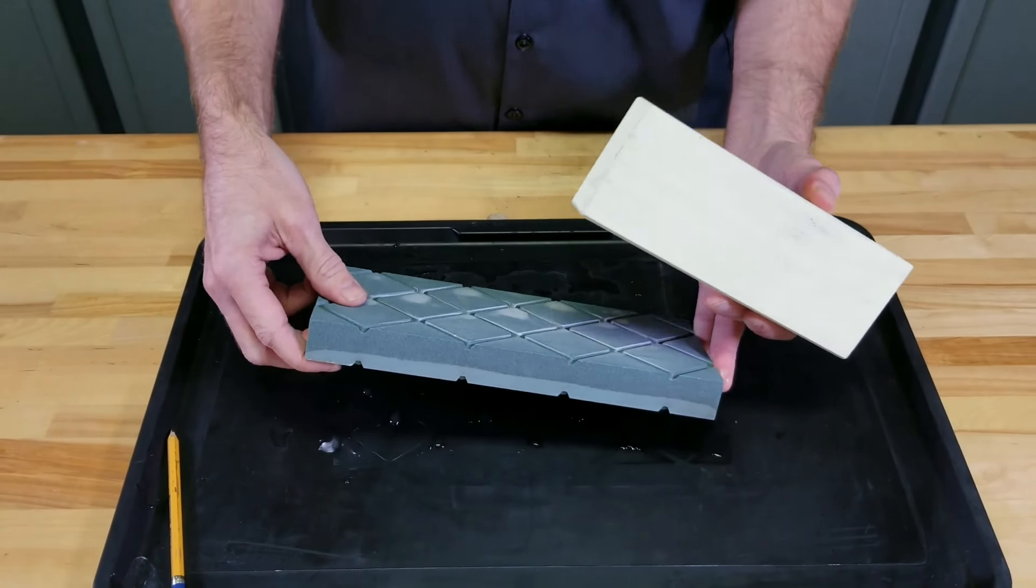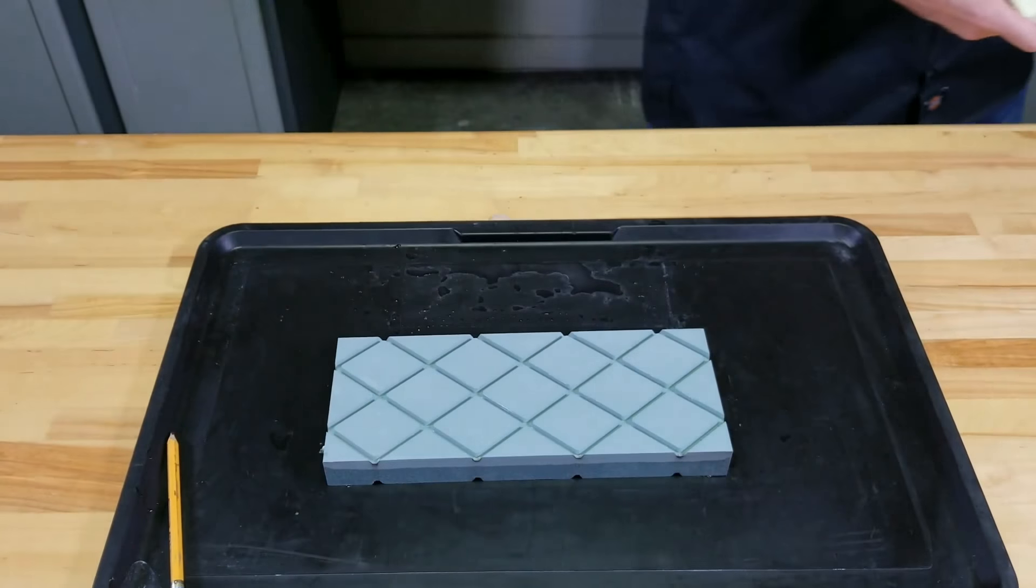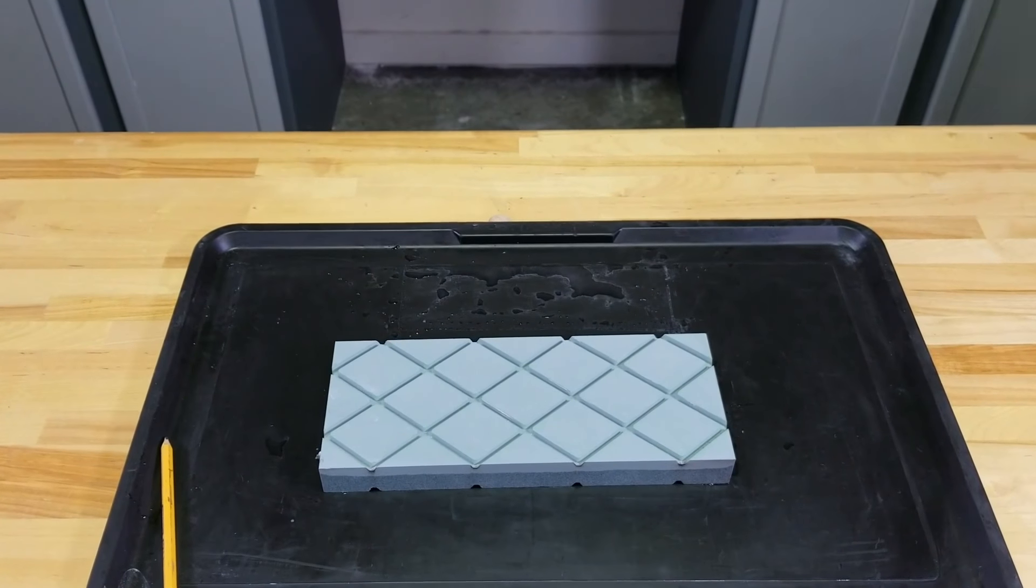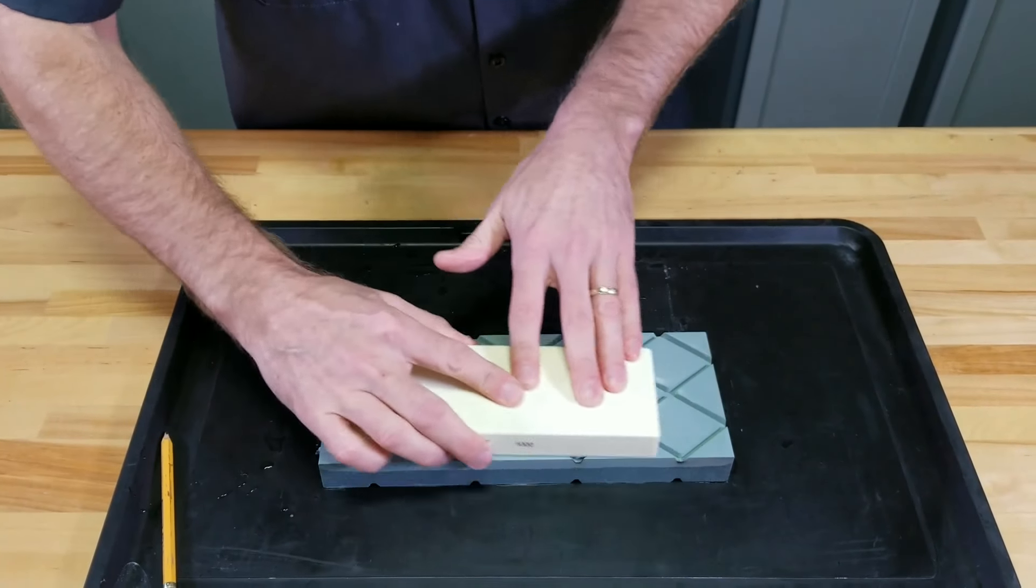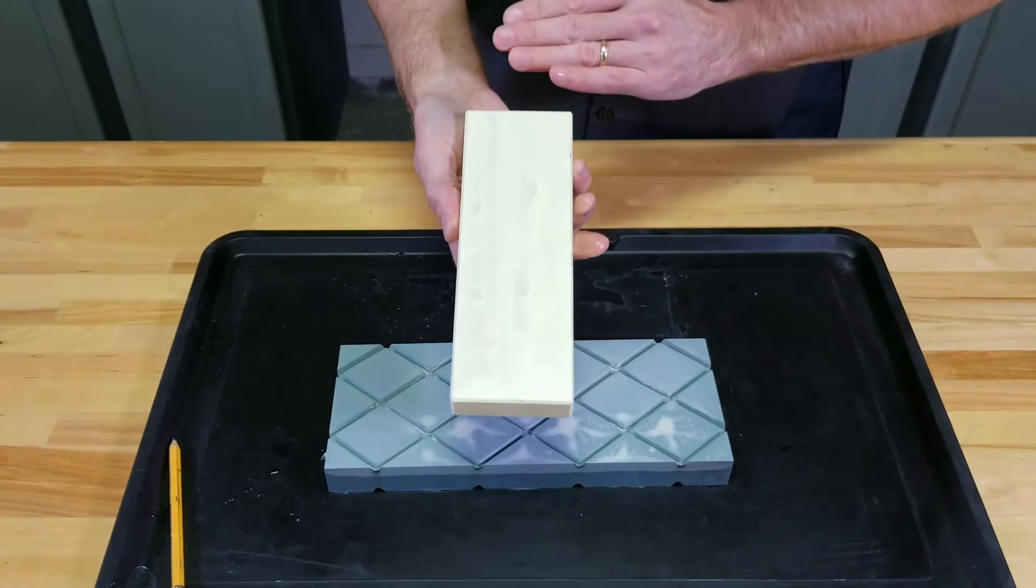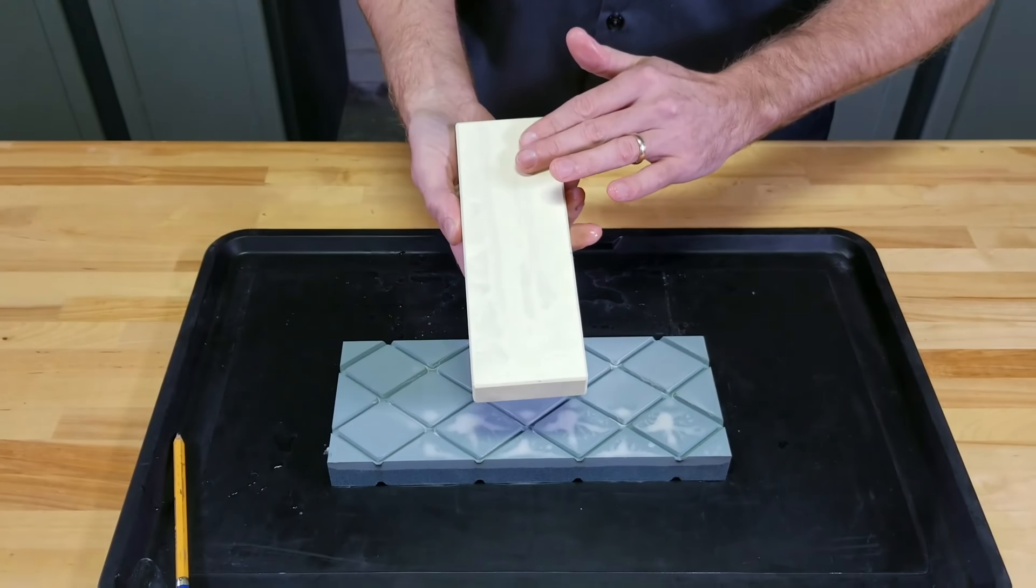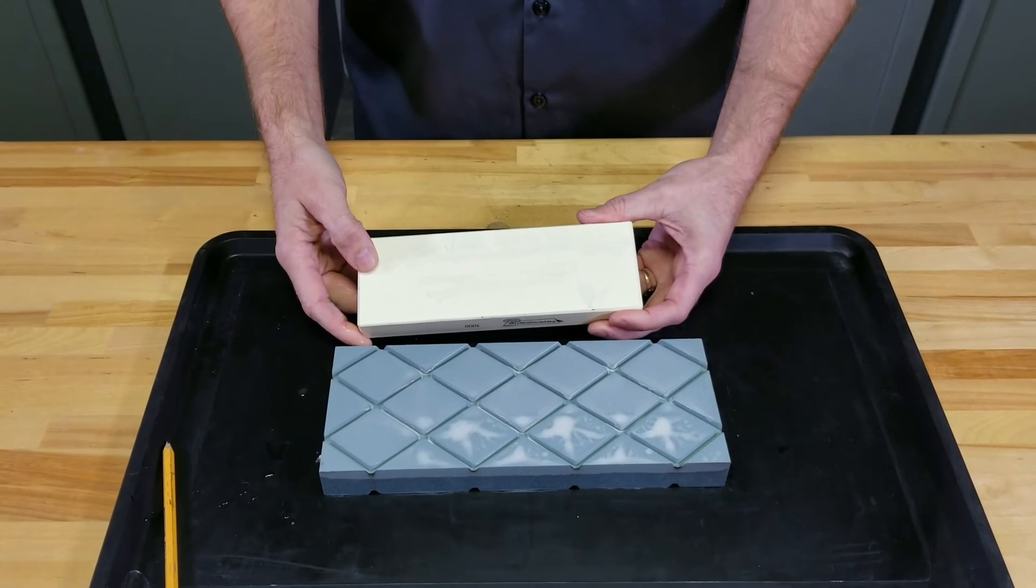Now if we want to leave a smoother surface, we can flip it over and, using the smooth side, create a very smooth surface on our water stone. That's the double-time flattening stone.